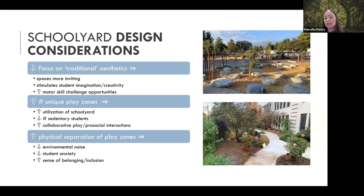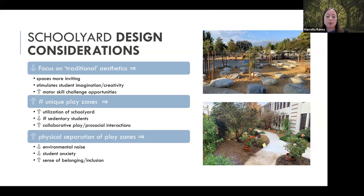Similarly, there was no relationship between the relative green space square footage and activity level, suggesting that nature-based permeable surfaces are not always enough. Rather, our research shows that the greater the number of unique play zones and the physical separation of those zones improves utilization of the schoolyard, decreases the number of sedentary students, and increases collaborative play. Greater plant life in schoolyards decreases environmental noise and student anxiety, and increases a sense of belonging and inclusion for all students.